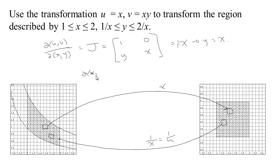So d(uv)/d(xy), the Jacobian for this forward direction, was x. Going the opposite direction, that Jacobian is 1 over x, which, according to our transformation, is the same as 1 over u.